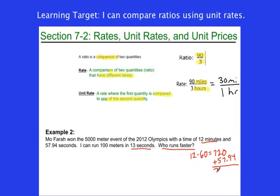So let's go ahead and line up these decimals here. And I find that his total time in seconds is 777.94 seconds. So that's how long it took him to run 5,000 meters.